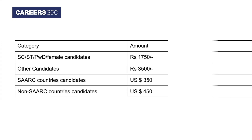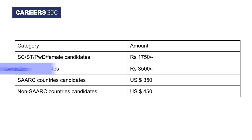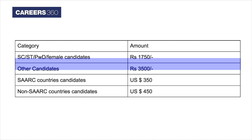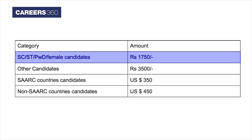General category candidates have to pay Rs. 3500 and reserved category candidates have to pay Rs. 1750 as the UCED registration fee.